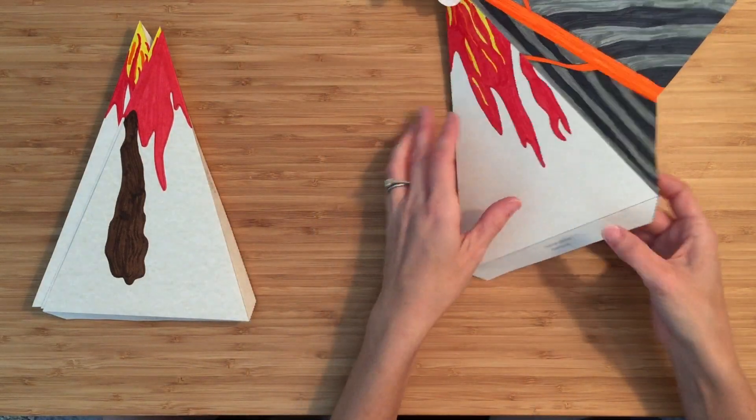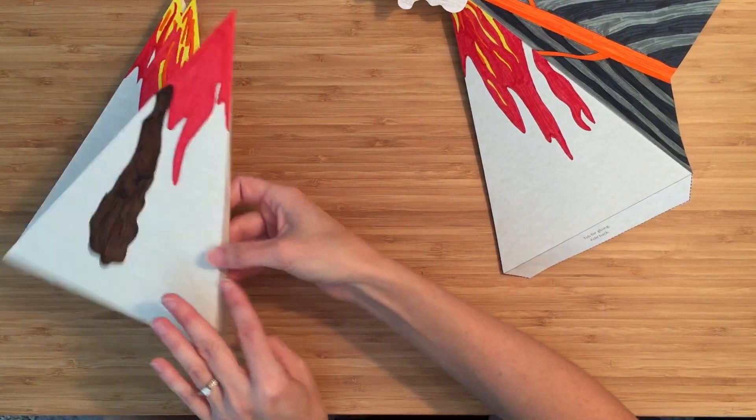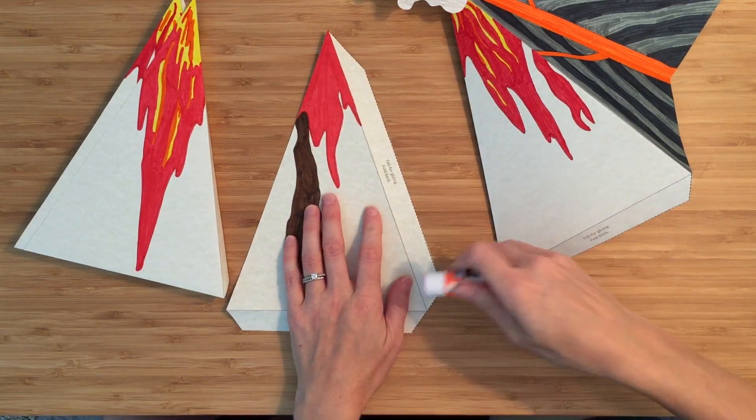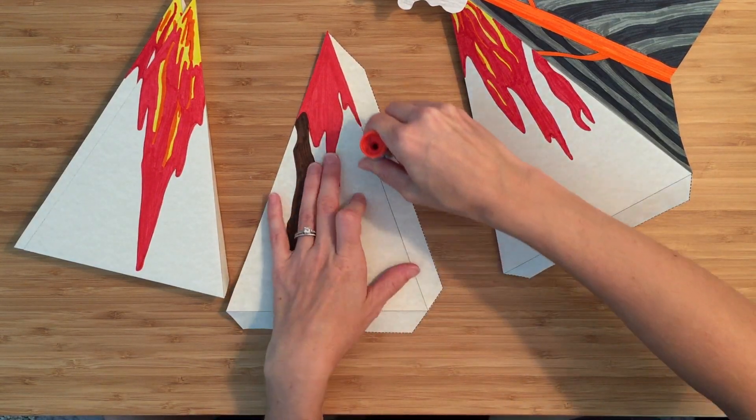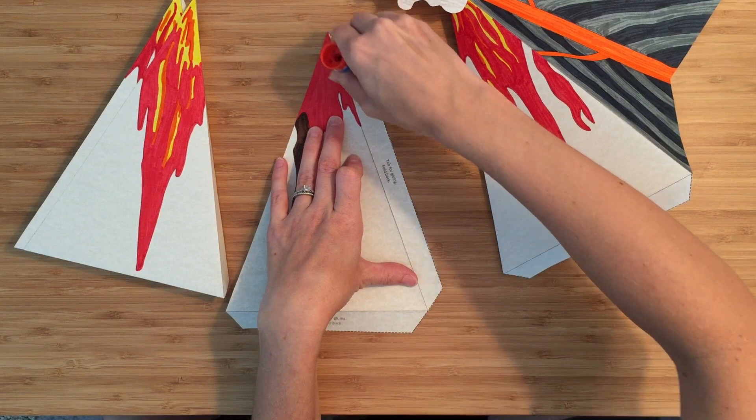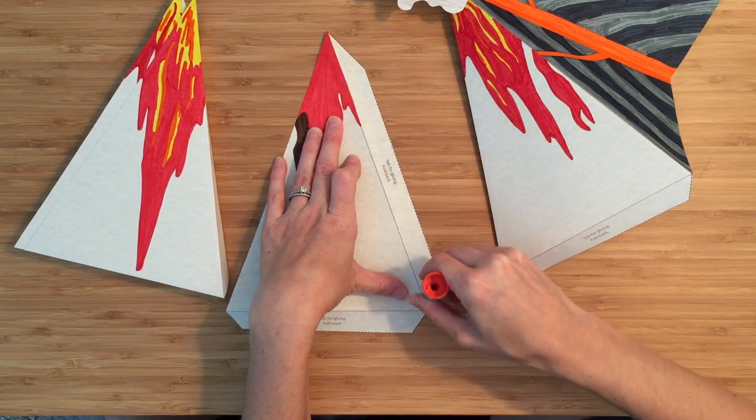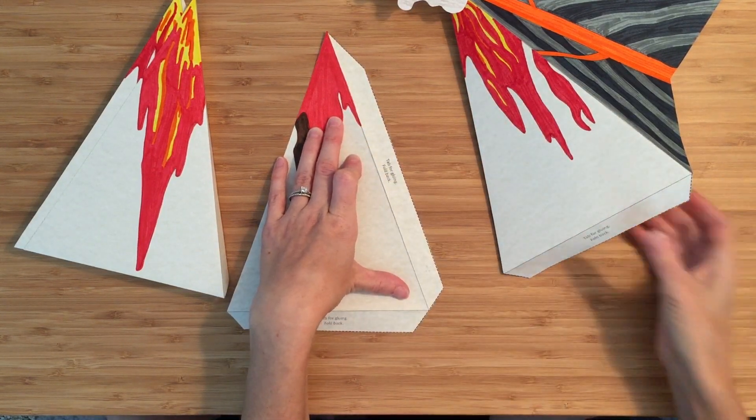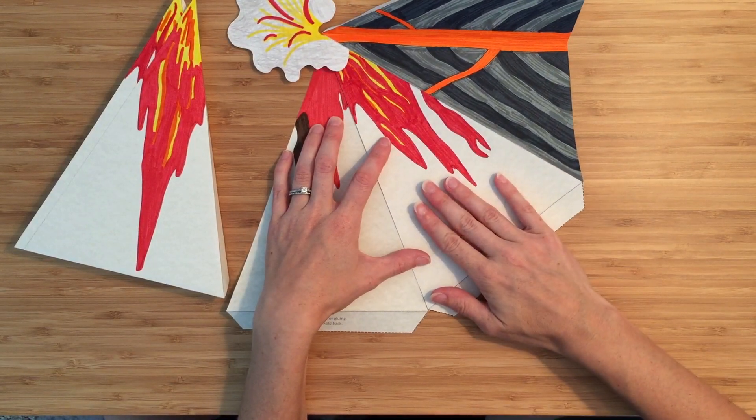Now I'm going to add all of the sides. So just like I did there. I flattened my tab a little bit to make it easier to glue. Get glue all over it. And then line up my edges carefully.